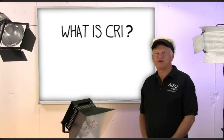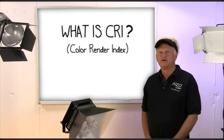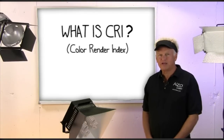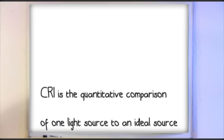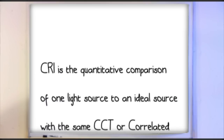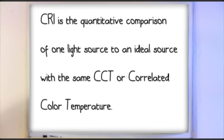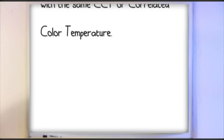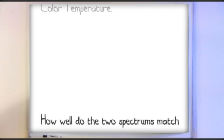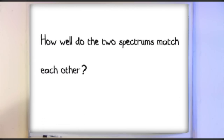So what is CRI, or Color Render Index? CRI is the quantitative comparison of one light source to an ideal source with the same CCT or correlated color temperature. In other words, how well do the two spectrums match each other?